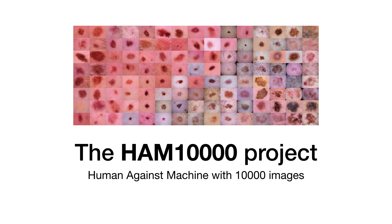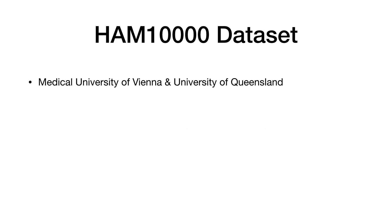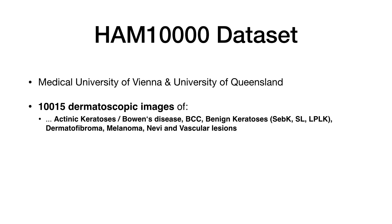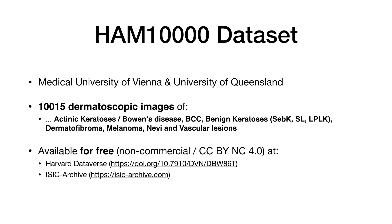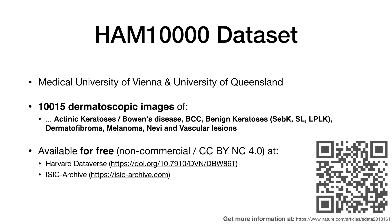This is why the HAM 10,000 project was initiated. The goal was to create a large public dataset with all of these classes included, which should cover far more than 90% of pigmented skin lesions in practice. The images were collected in Austria and Australia, summing to a total of 10,015 images. They are available for free for non-commercial purposes such as research — if you want to know more, simply follow the QR link in the corner.